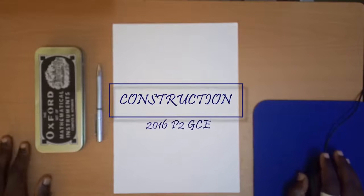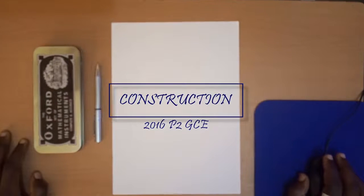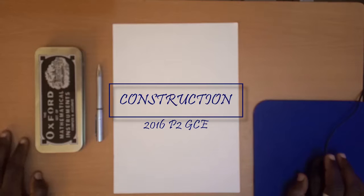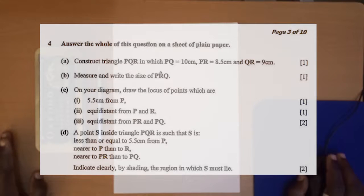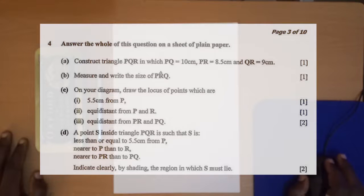In this video tutorial we are answering the construction question from the 2016 GCE Paper 2, question number four. We've been asked to construct triangle PQR in which PQ is 10 centimeters, PR is 8.5 centimeters, and QR is 9 centimeters, measure and write the size of angle PRQ. Parts B and C ask us to draw the locus of points which are 5.5 centimeters from P, equidistant from P and R, and equidistant from PR and PQ.